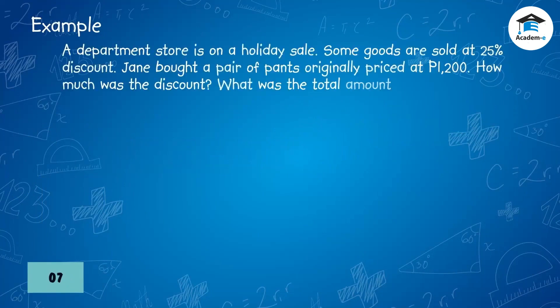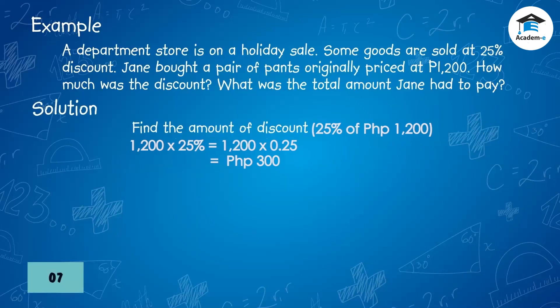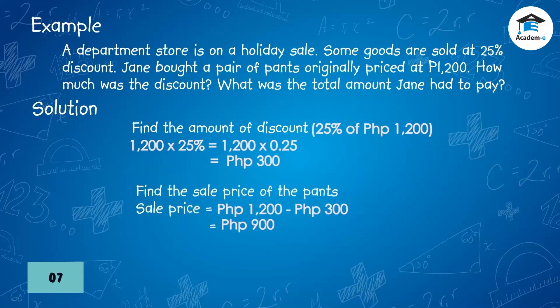Example: a department store is on a holiday sale and some goods are sold at 25% discount. Jane bought a pair of pants originally priced at 1,200 pesos. How much was the discount? What was the total amount Jane had to pay? Solution: find the amount of discount — 25% of 1,200: 1,200 × 0.25 = 300 pesos.